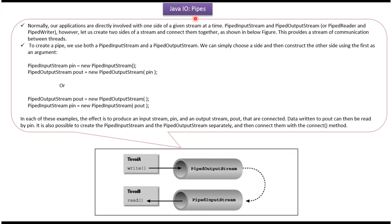Hi, in this video tutorial I will cover pipes. To create a pipe, we have to use PipedOutputStream and PipedInputStream. In order to create a pipe, we should connect PipedOutputStream with PipedInputStream.